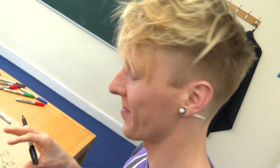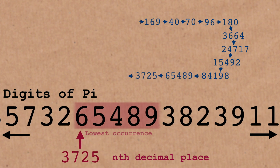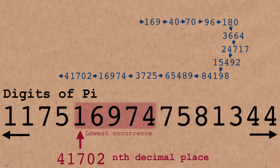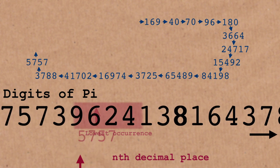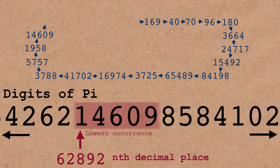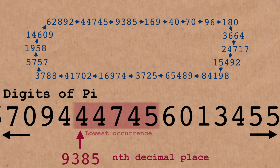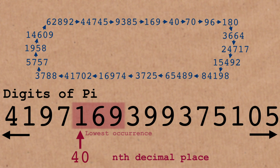So 84,198 is the highest point of our path as we descend into the decimal expansion of pi. That then goes back down to 65,489, then 3,725, then 16,974, then 41,702, then 3,788, then 5,757, then 1,958, then 14,609, then 62,892, then 44,745, then 9,385 — and finally we get 169 again. So we loop back round to 169, which appears in the 40th position.